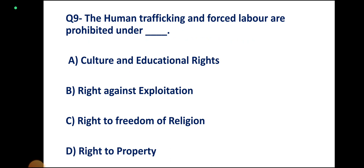Question number 9. Human trafficking and forced labor are prohibited under which right? Options: Cultural and Educational Rights, Right Against Exploitation, Right to Freedom of Religion, Right to Property. Correct answer: Right Against Exploitation.